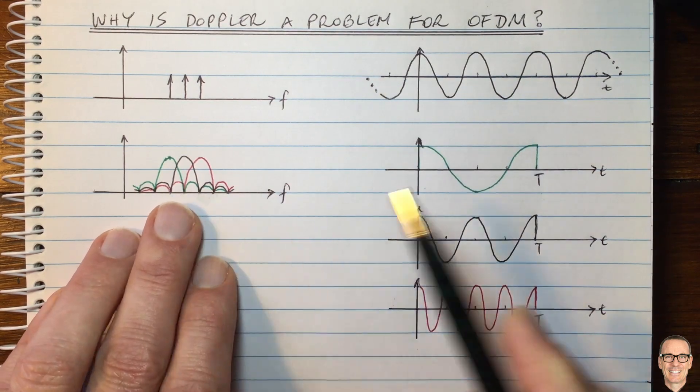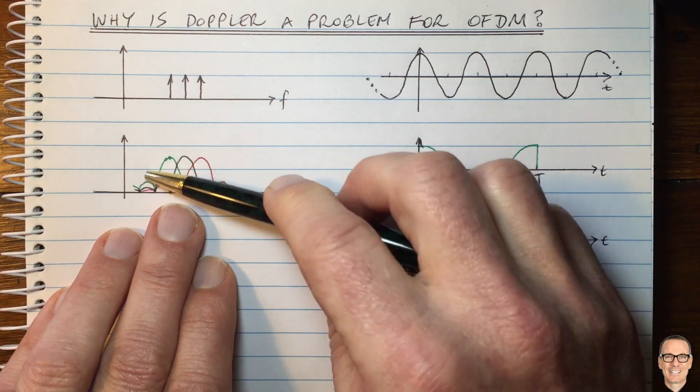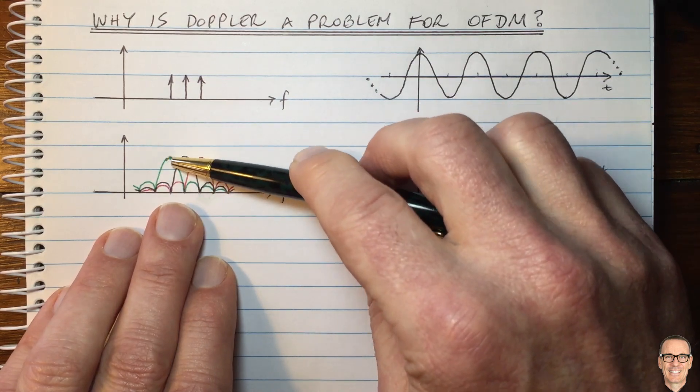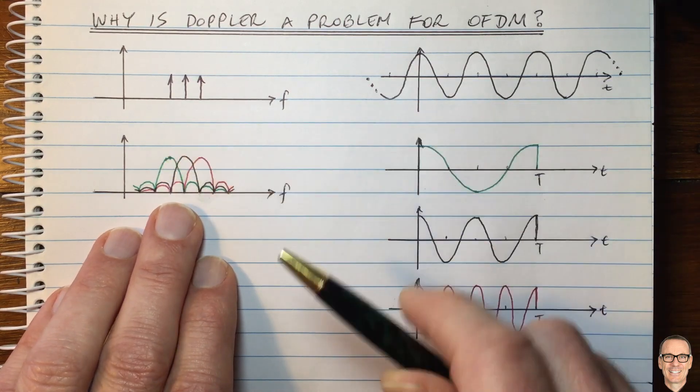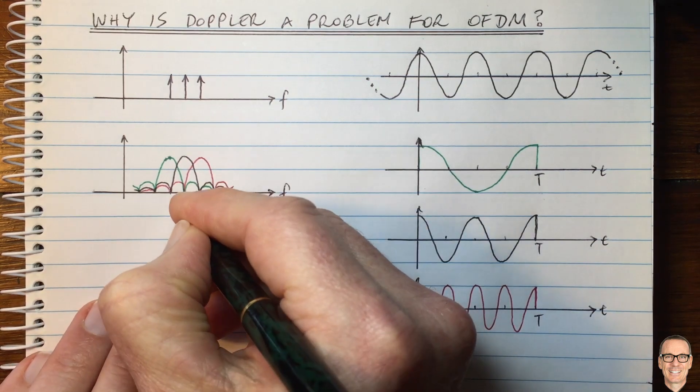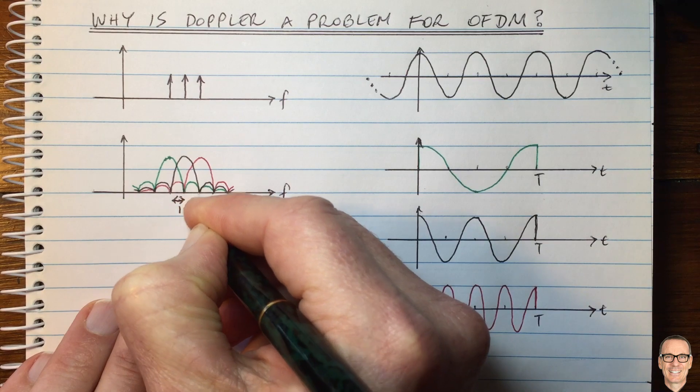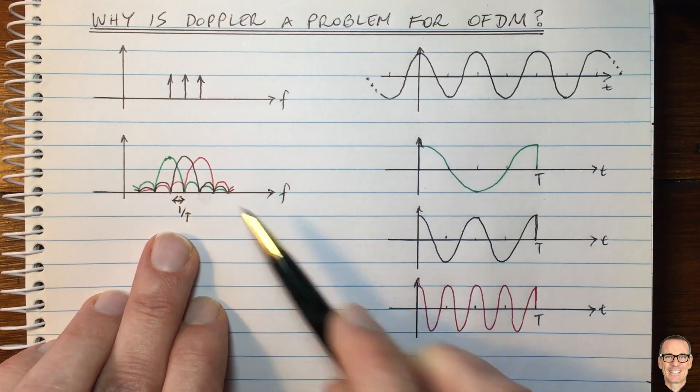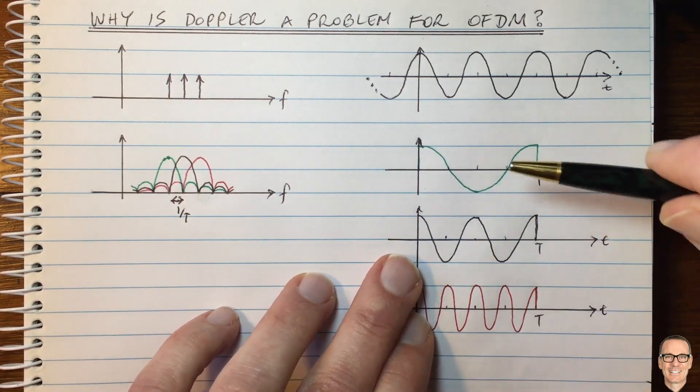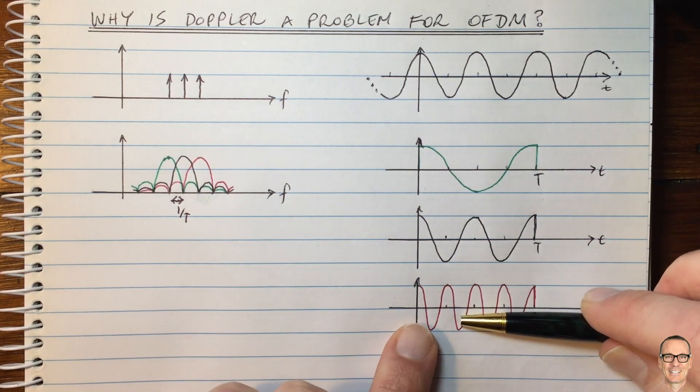Well, it turns out that if we choose them to be separated in this way, where these sinc functions are separated by 1 divided by T, then in that particular case, 1 on T separation, then in that particular case, these waveforms can be separated out.